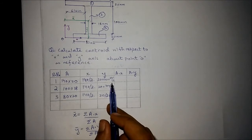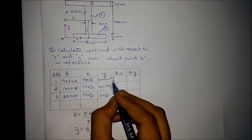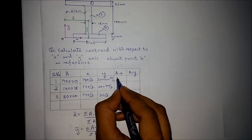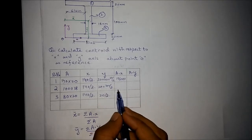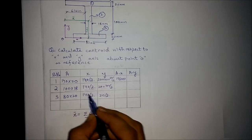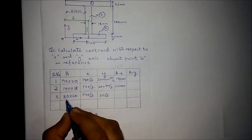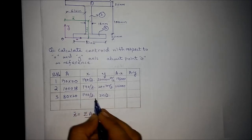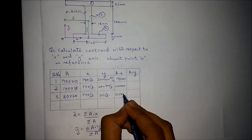For calculating AX we multiply area by x. For shape 1 this gives 196,000. For shape 2, multiplying gives 126,000. For shape 3, multiplying gives 112,000.